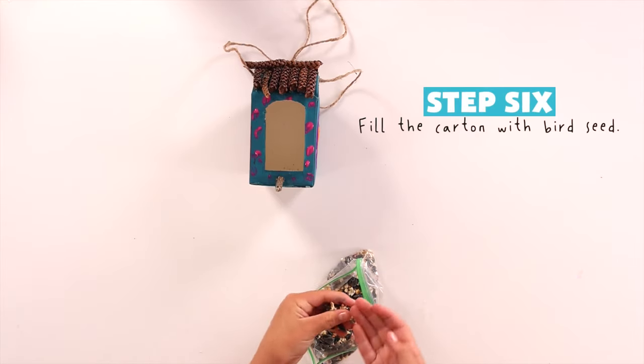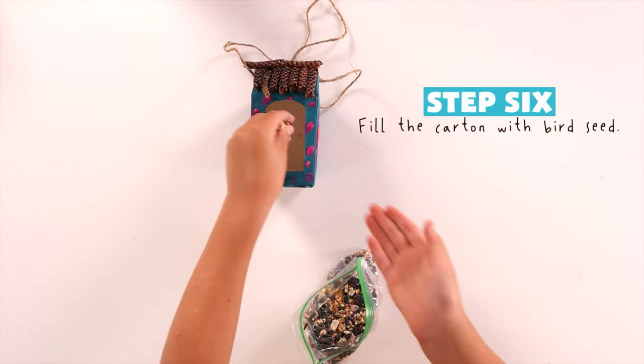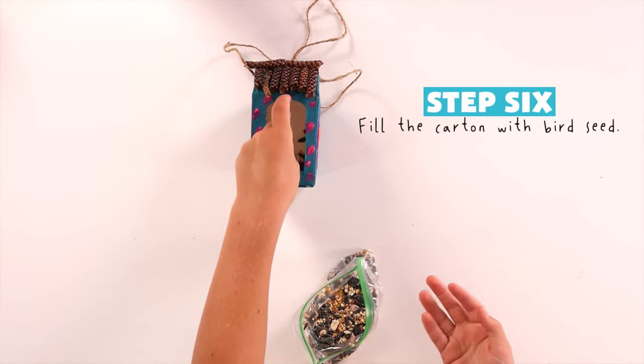Then you can put bird food in the bottom of the house. Once the glue is dry, you can hang it up.